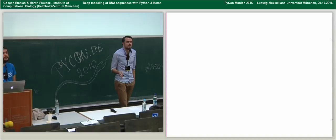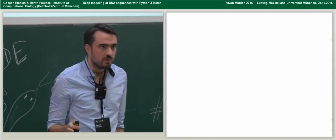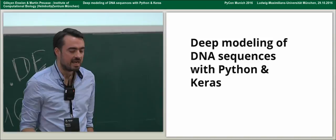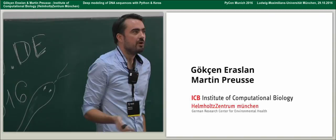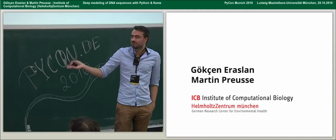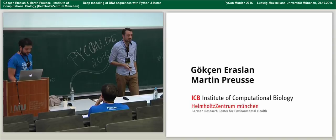I've never given a lecture at university, but now I know how it feels — a room half full of people behind their computers. So we're going to talk about deep learning of biological sequences today. Biological sequences, with that we mean DNA. And we're going to do this with Python and Keras. We are Gokchen and me, Martin, both working at the Institute of Computational Biology at Helmholtz Center in Munich. Gokchen is a computer scientist by training who moved to computational biology; I'm a biochemist who moved to computational biology during my PhD.